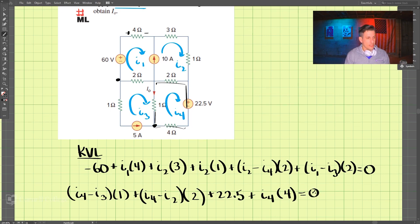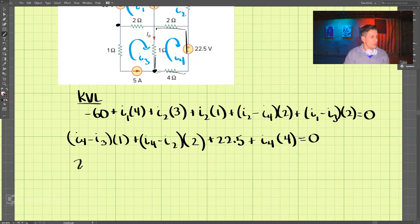And that whole thing should equal 0. So we have two equations now, but we need four equations. We need two more equations.